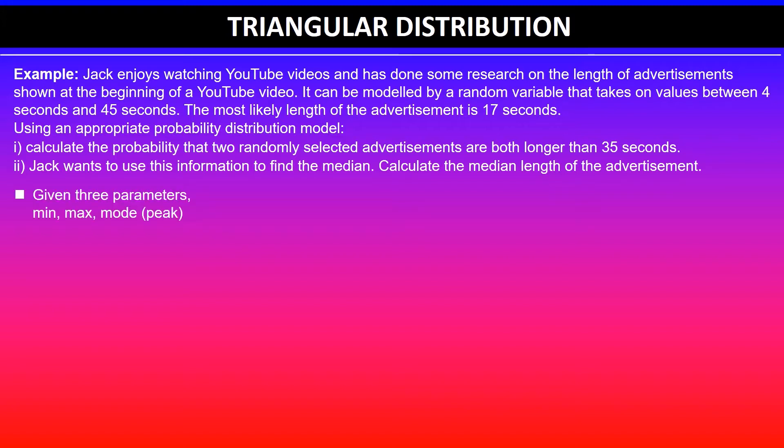So in this case we're given three parameters: a minimum value of 4 seconds, maximum 45 seconds, and the most common value of 17 seconds. We're asked to find the median, and we know that median will capture 50 percent. This will give us the area that is already given, which is 0.5.